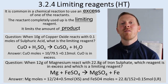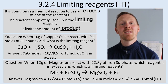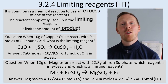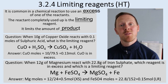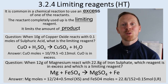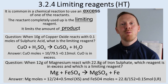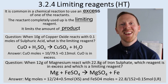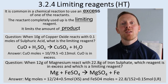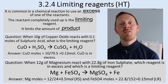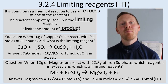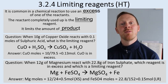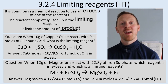For iron sulfate: the relative atomic mass of iron is 56, sulfur is 32, and oxygen is 16, but there are four atoms of oxygen. Adding those all up: 56 plus 32 plus 4 lots of 16 equals 152. So the relative formula mass of iron sulfate is 152. We need to work out how many moles we've got: 22.8 grams divided by 152 gives us 0.15 moles of iron sulfate.